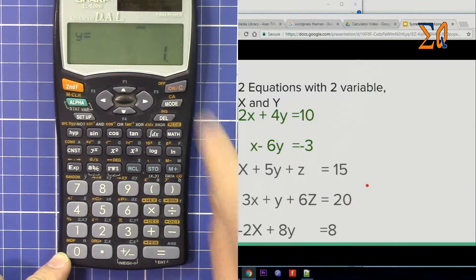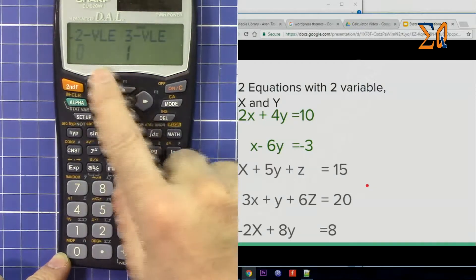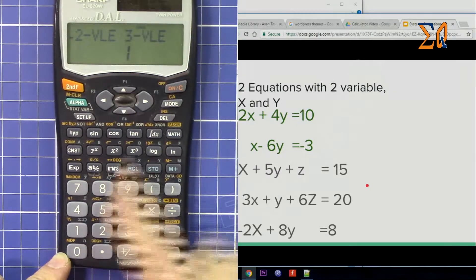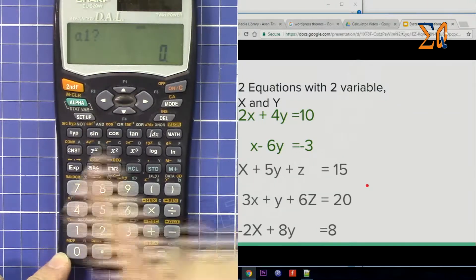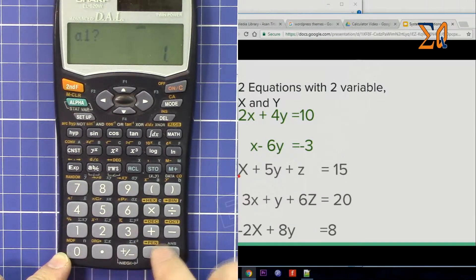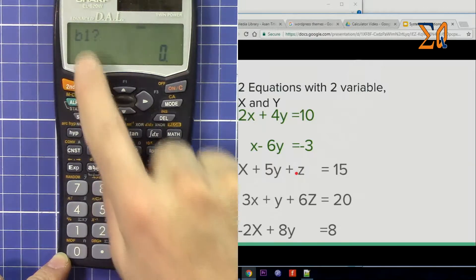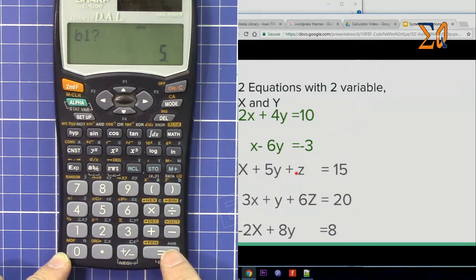Press Mode, go down to Equation, and press 3 for three variables. Press 1 to continue. Now it asks for A1, which is 1. The coefficient of Y is 5, and the coefficient of Z is 1. Now enter D, which is 15. So the first equation is x + 5y + z = 15.